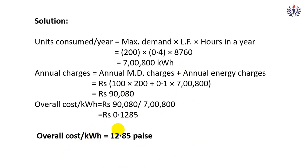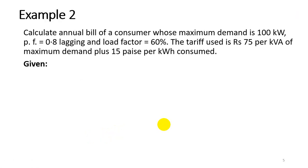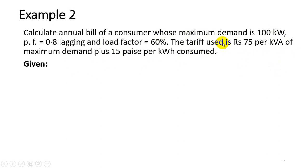Moving to the next example, which introduces power factor. Calculate the annual bill for a consumer whose maximum demand is 100 kilowatt, power factor is 0.8 lagging, and load factor is 60%. The tariff is rupees 75 per kVA of maximum demand plus 15 pies per kilowatt hour consumed. Note the key difference: the tariff is now in kVA, not kW.